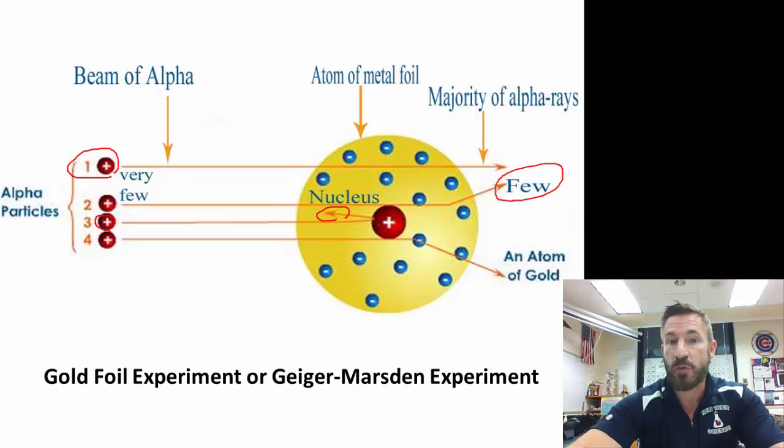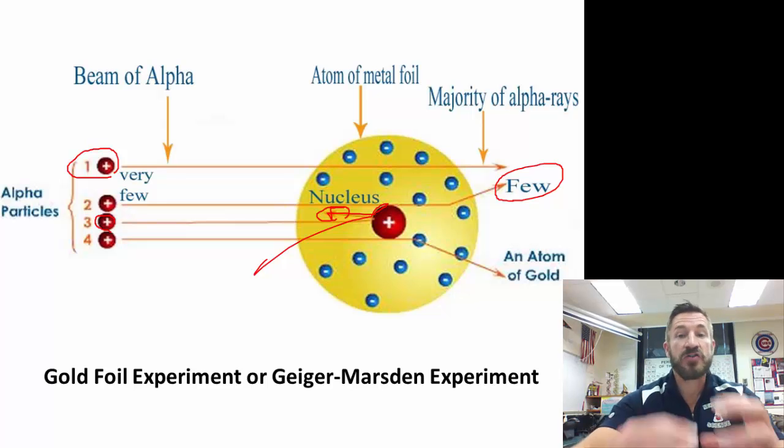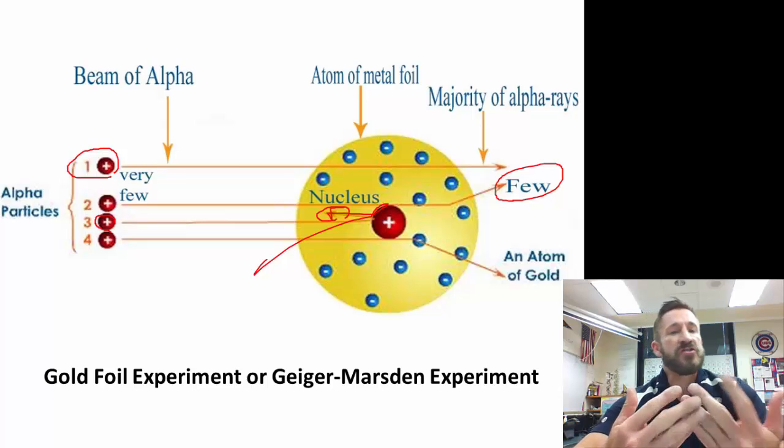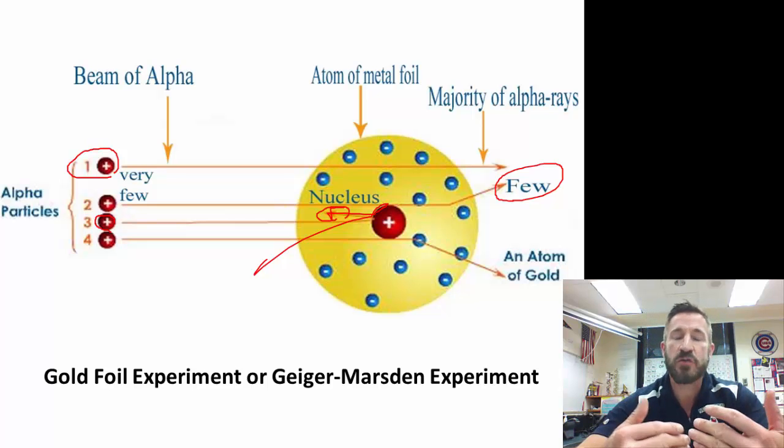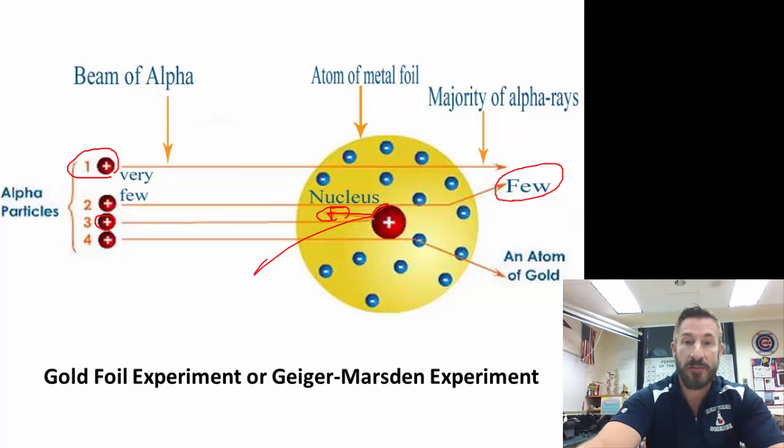He used a helium nucleus which has two protons and two neutrons. It is positively charged because it has more protons than electrons. Most of the particles went straight through. Very few showed this deflection, and very few showed this reflection. The alpha particles are positively charged, so the fact that when they got close to the nucleus they were ricocheted in the other direction verifies that there's a very small, very dense nucleus. Maybe one in every 2,000 were deflected - an extremely small number that were shot back.